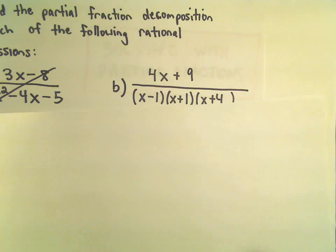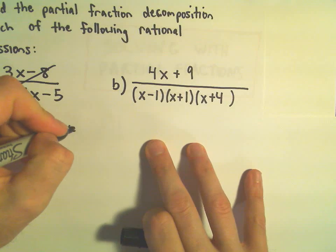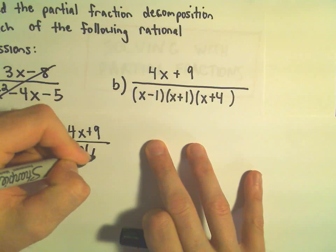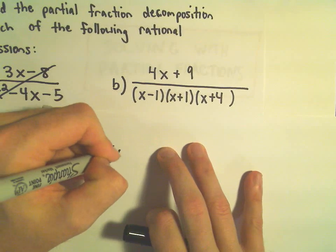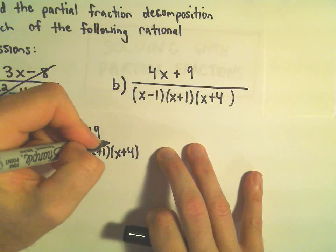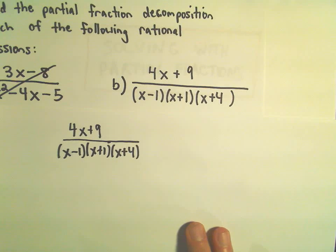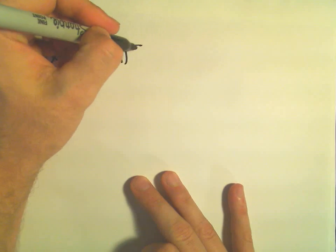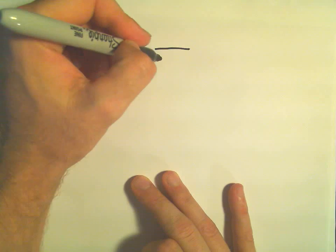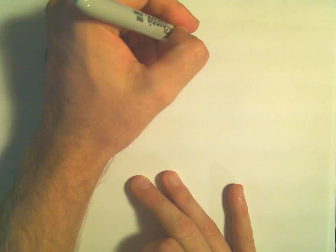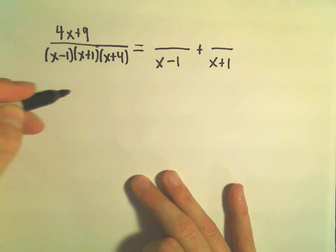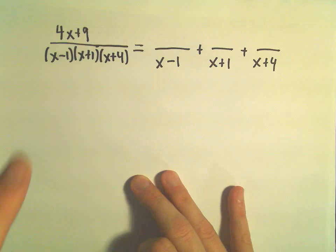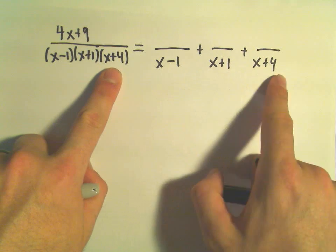Same thing as before, I'm going to rewrite my original expression: (4x + 9) over (x minus 1)(x plus 1)(x plus 4). This is nice because the denominator is already factored into all linear terms. What we're going to do is break that up into 3 separate fractions — one with denominator (x minus 1), another with (x plus 1), and one with (x plus 4). Every factor gets its own little fraction.